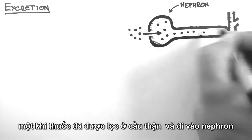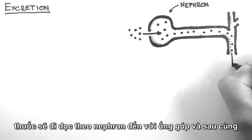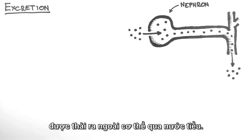Once the drug is in the nephron, it flows through the nephron into the collecting ducts and ultimately out of the body in the urine.